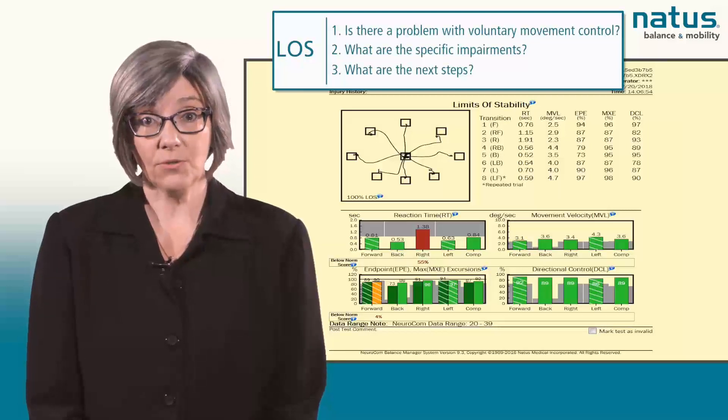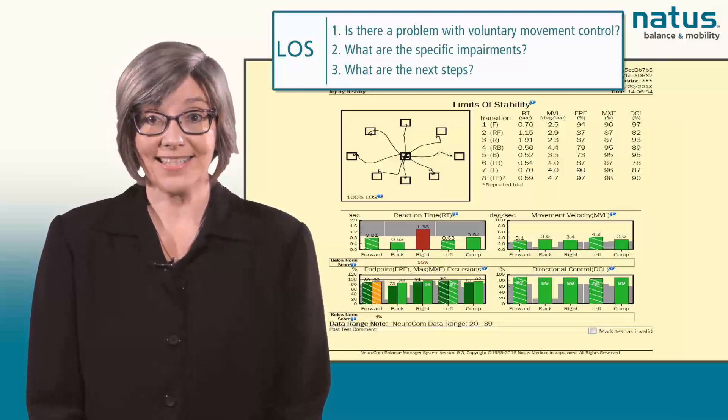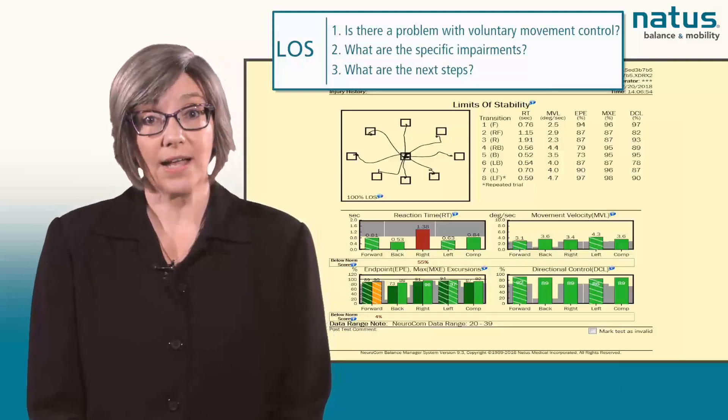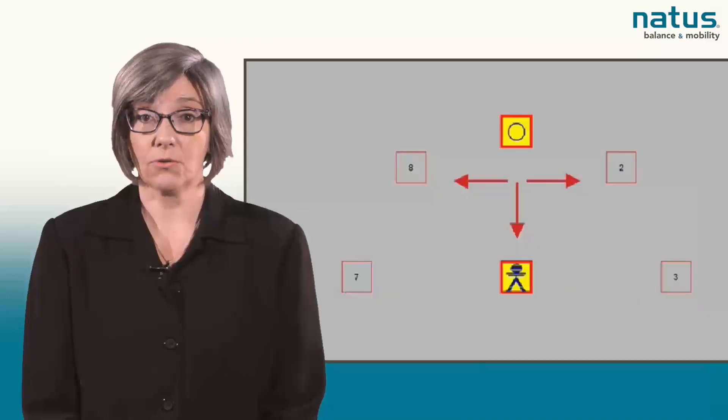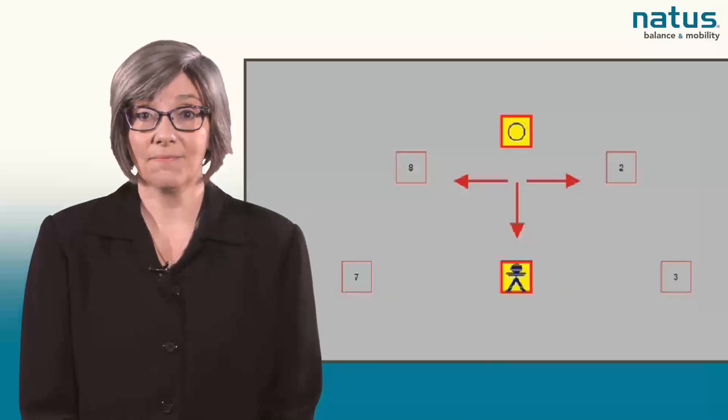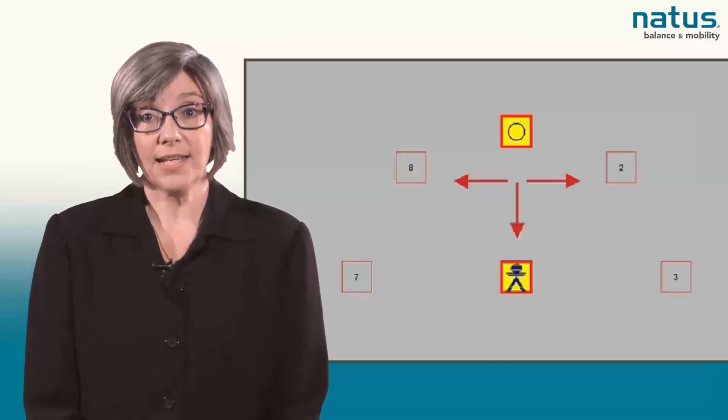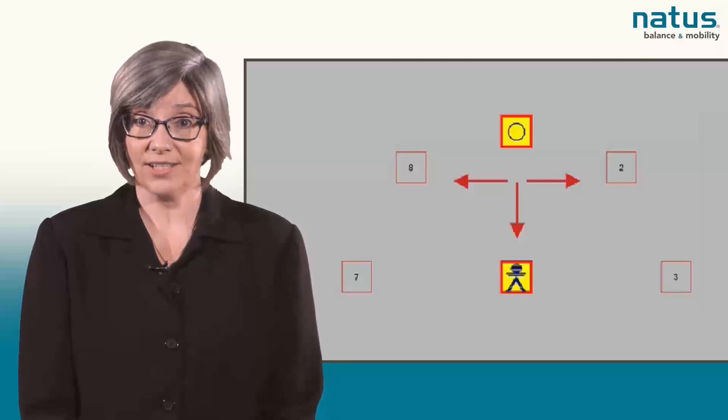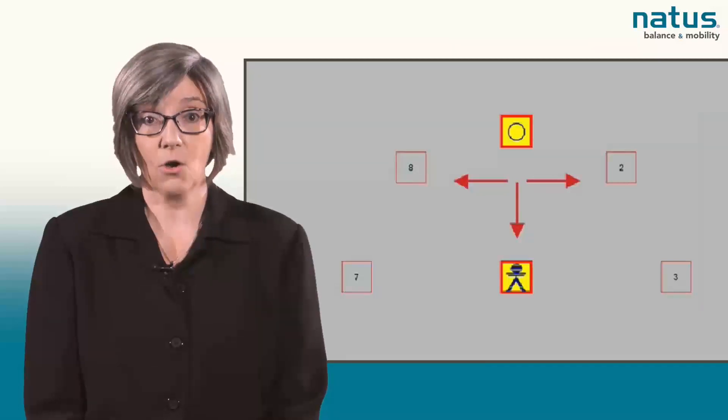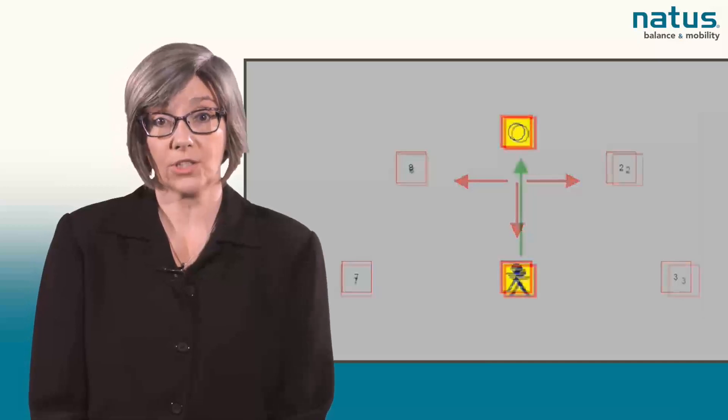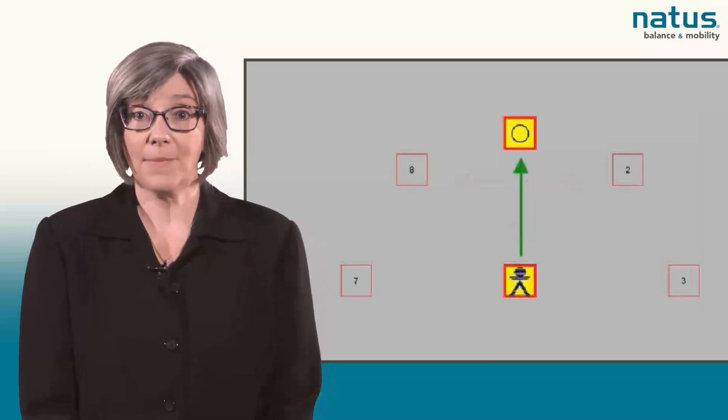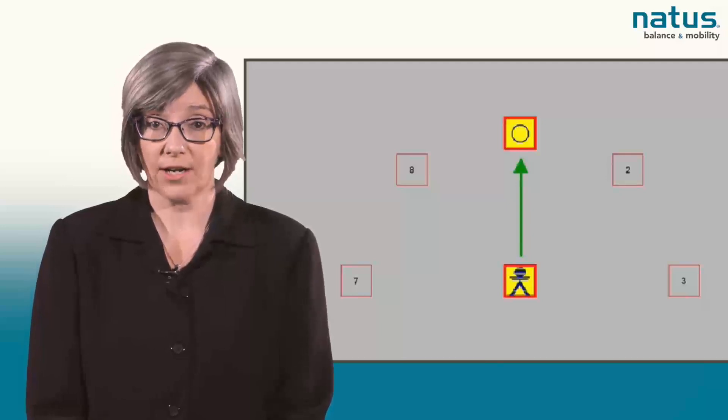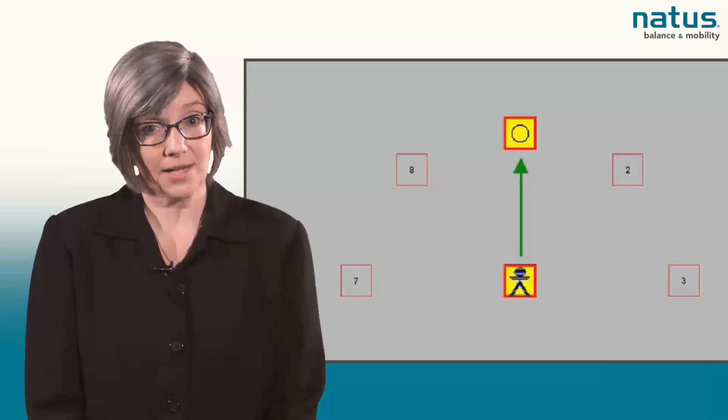Let's review the results of the Limits of Stability test. The quality of movement control is quantified by the directional control, or DCL. Directional control is a comparison of the amount of movement exhibited by the patient in the intended direction, or the direction toward the target, compared to the amount of extraneous movement, or movement away from the target. This value is expressed as a percentage.